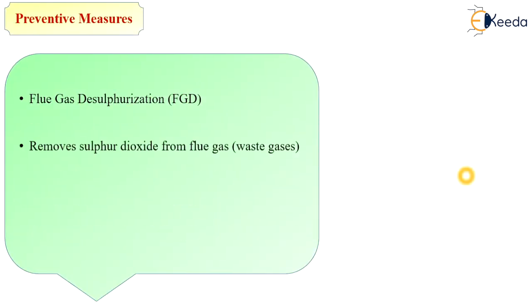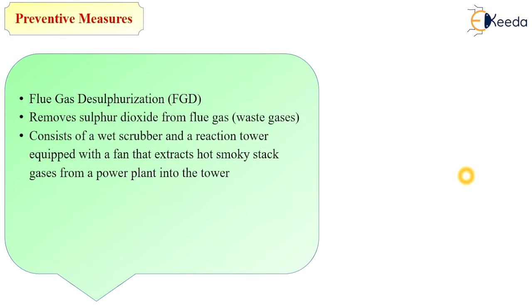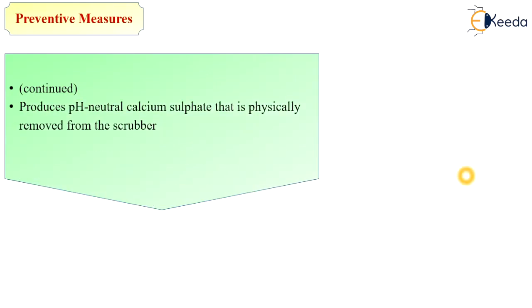Flue gas desulfurization is a key treatment method. It removes sulfur dioxide from flue gas using a wet scrubber and reaction tower equipped with a fan that extracts hot smoky stack gases from the power plant into the tower, releasing clean air into the atmosphere. Lime or limestone in slurry form is injected into the tower to react with sulfur dioxide, producing pH-neutral calcium sulfate that is physically removed from the scrubber and can be used for industrial purposes as a reusable product.